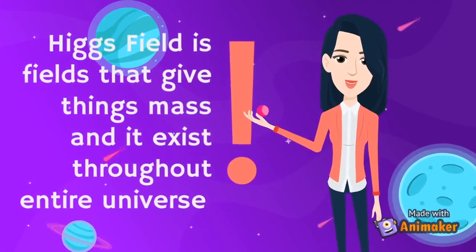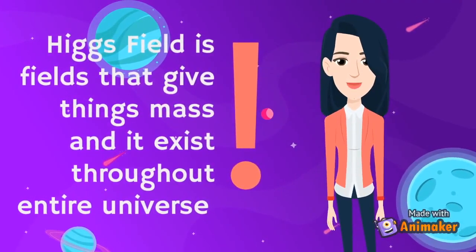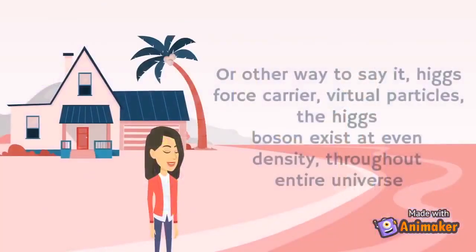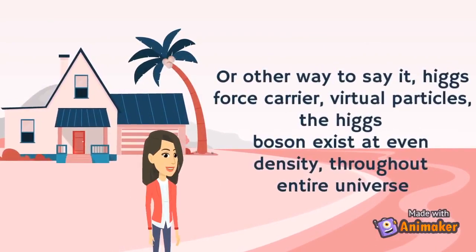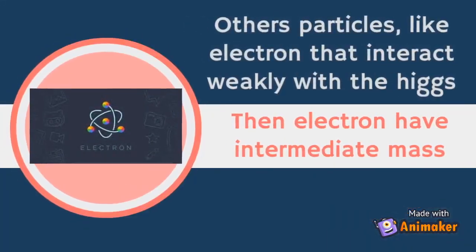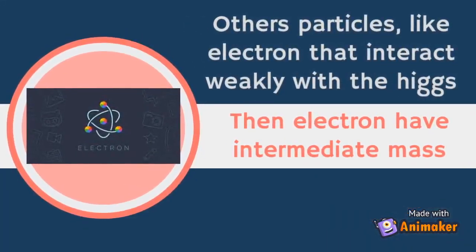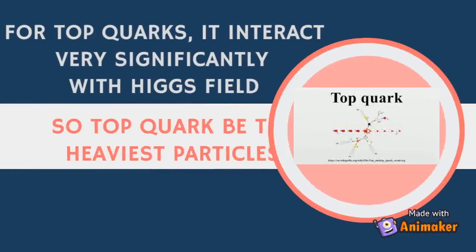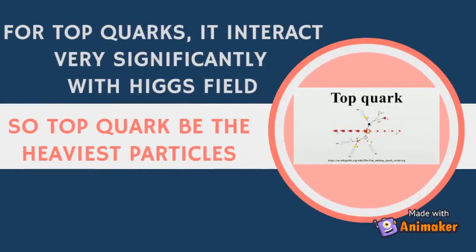The Higgs field is a field that gives things mass and it exists throughout the entire universe. Another way to say it: the Higgs force carriers, virtual particles — the Higgs boson — exist at even density throughout the entire universe. Massless particles like the photon don't interact with the Higgs force carrier, so they don't have mass. Other particles like the electron that interact quickly with the Higgs then have intermediate mass. For top quarks, they interact very significantly with the Higgs field, so top quarks are the heaviest particle.